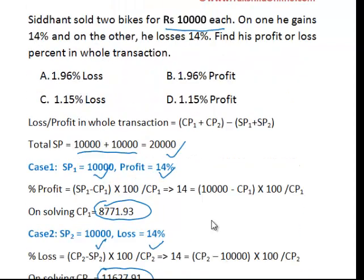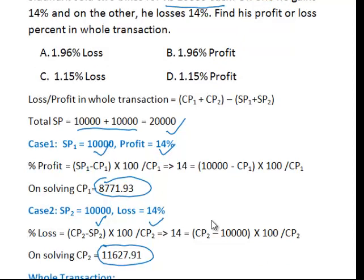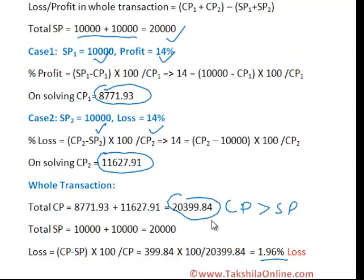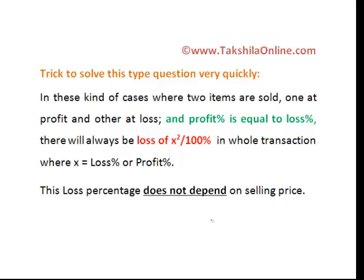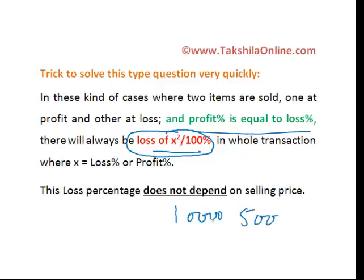In the previous question the selling price was 50,000; in this question selling price was 10,000. Still, the loss is the same — 1.96% in both cases. So the key learning is: if two items are sold one at profit and another at loss and profit percentage equals loss percentage, there will always be a loss of x² by 100, and this loss is independent of selling price. It doesn't matter if selling price is 10,000, 50,000, or 50 rupees — loss will be the same 1.96% as long as profit% and loss% are both 14%.